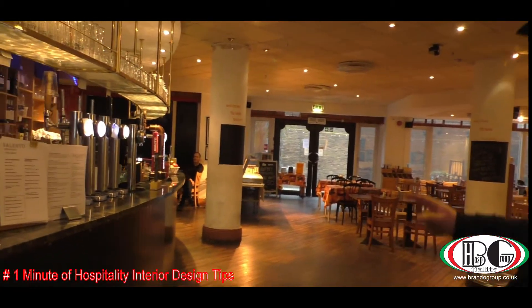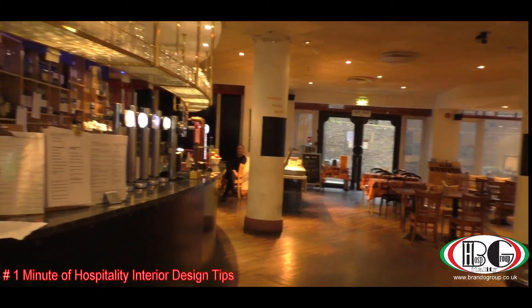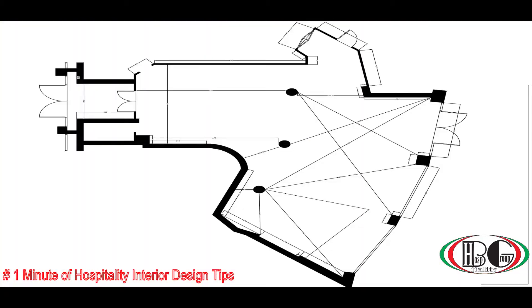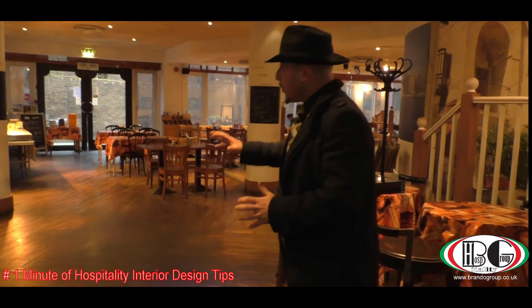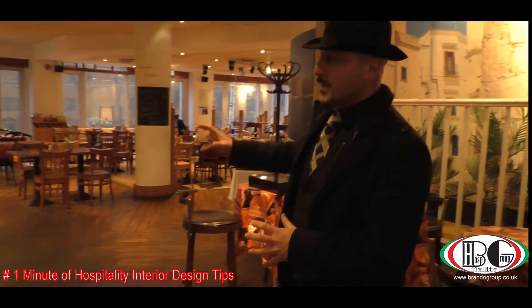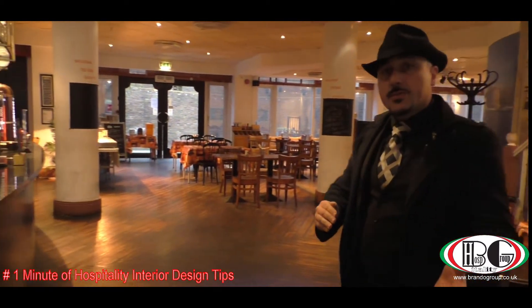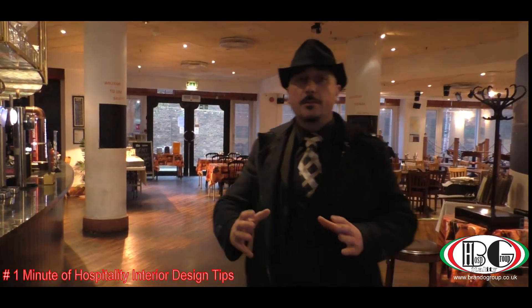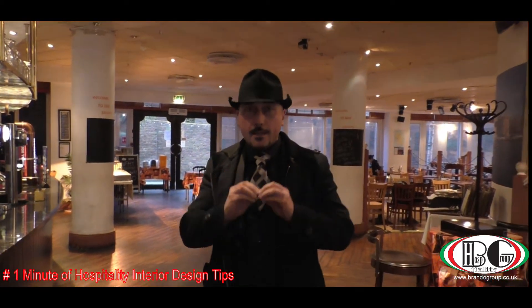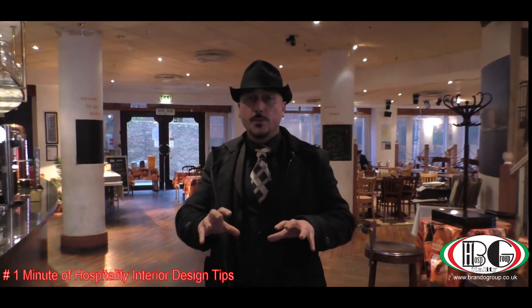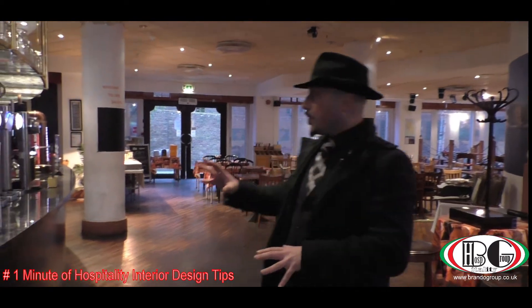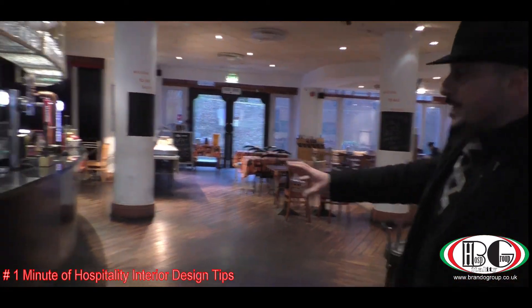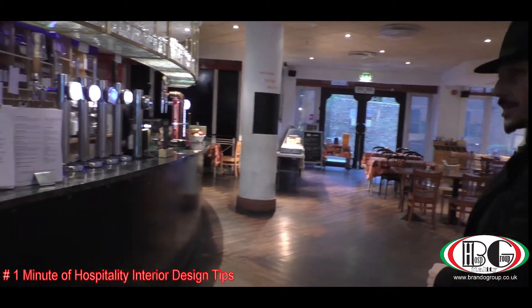So what we did, we tried to measure each column so that we try to see the floor plan from a client point of view, and obviously from the owner point of view. The actual bar is on the left side, and this is the seating room.